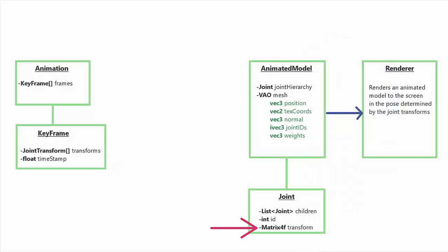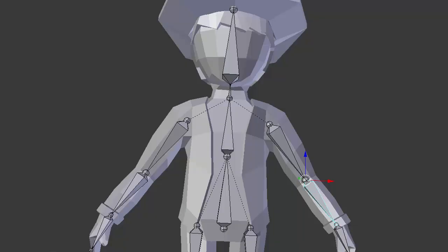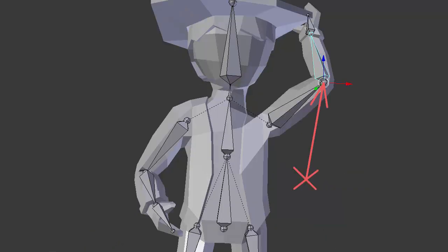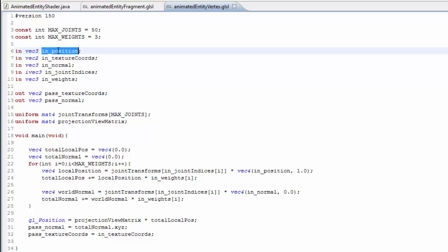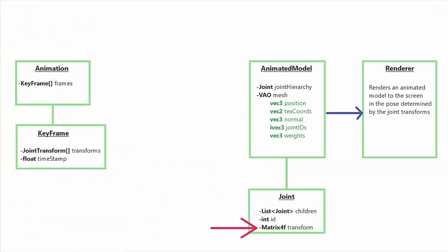However, each of the joint transforms that are actually used for rendering is the model space transform required to move the joint from its original position to the position in the current pose. This is so that when you use it to transform a vertex in the vertex shader, it transforms the vertex from its original position in the mesh to the position it should be in the posed mesh. The vertex positions are in model space in relation to the model's origin, so that's why these joint transforms need to be in model space as well. These final joint transforms are going to have to be calculated — something I'm probably going to be doing an entire tutorial about, as these matrix calculations and different spaces were the hardest parts to get my head around.